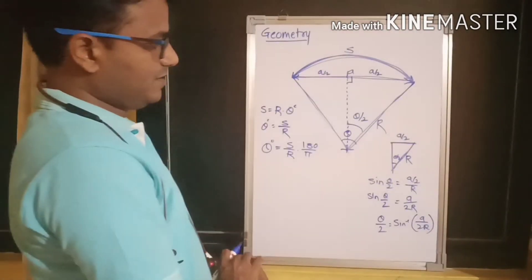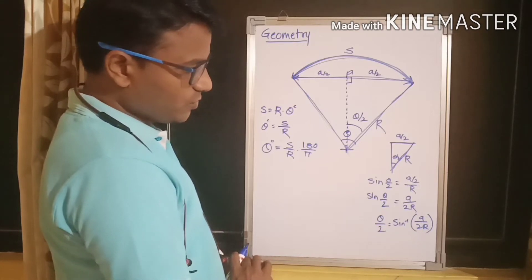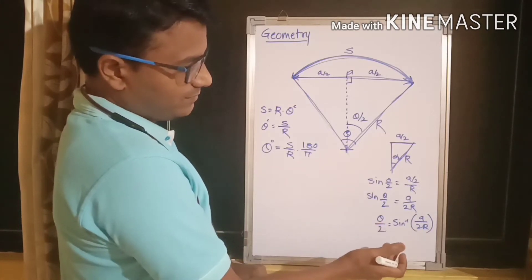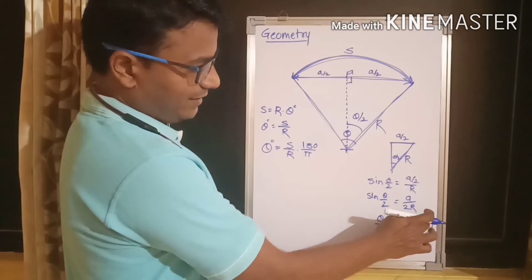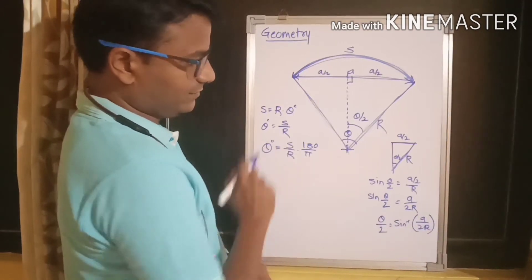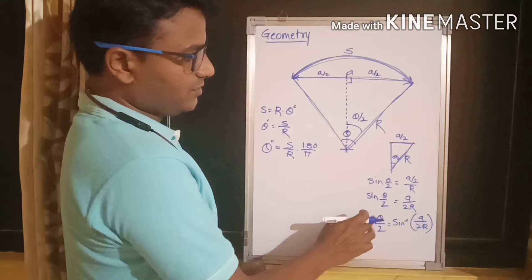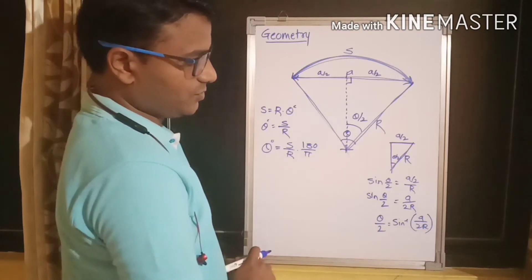So, it will become theta by 2 will be equal to sin inverse of a by 2r. Okay? Now, what we want to do? We want to calculate, find the relation between a and s over here. What is common in these two equations?